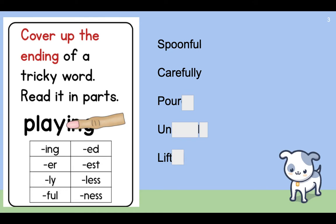The next word I have is 'pour.' I have an -ed ending here, so I'm going to try all three. I'll try 'pourd' — that doesn't make sense. I'll try 'port' — I don't think that's the word I want. 'Poured' — I poured myself a cup of tea, I poured myself a glass of water. That's the word I want. I used covering up the ending of the word to figure out that this whole word is 'poured.'